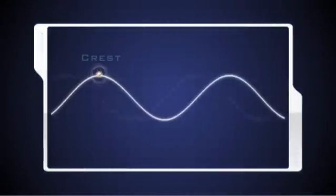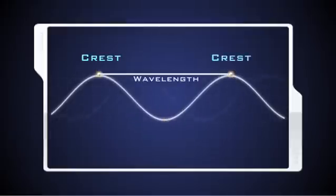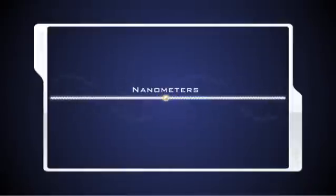EM waves have crests and troughs like ocean waves. The distance between crests is the wavelength. While some EM wavelengths are very long and are measured in meters, many are tiny and are measured in billionths of a meter, nanometers.